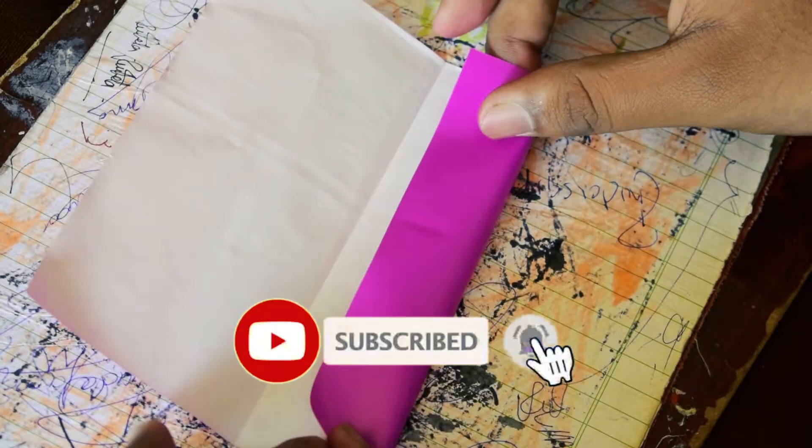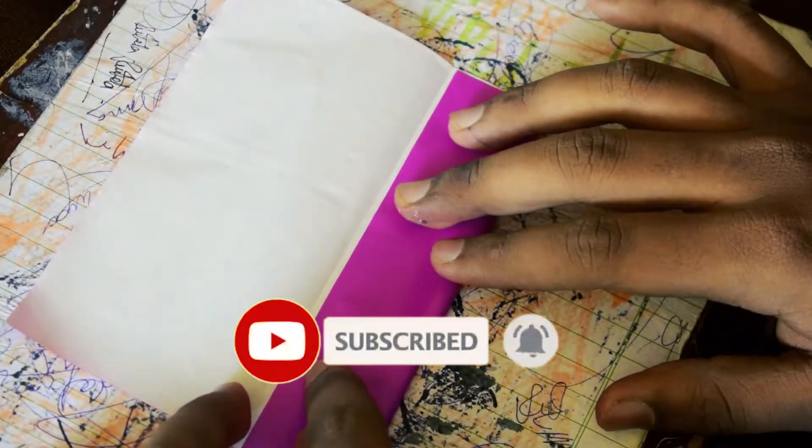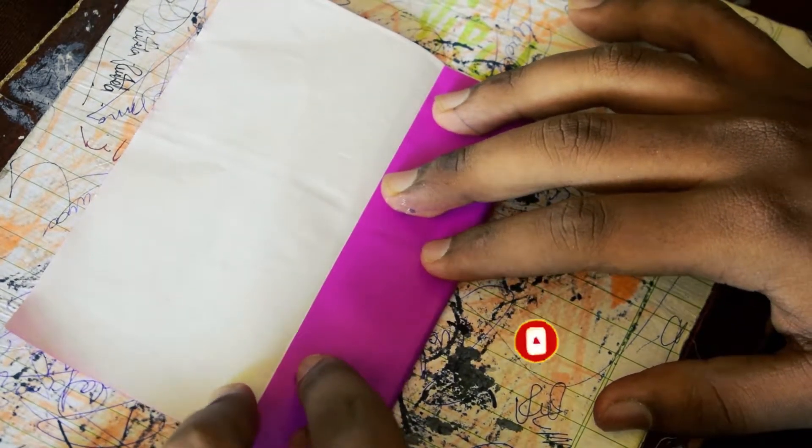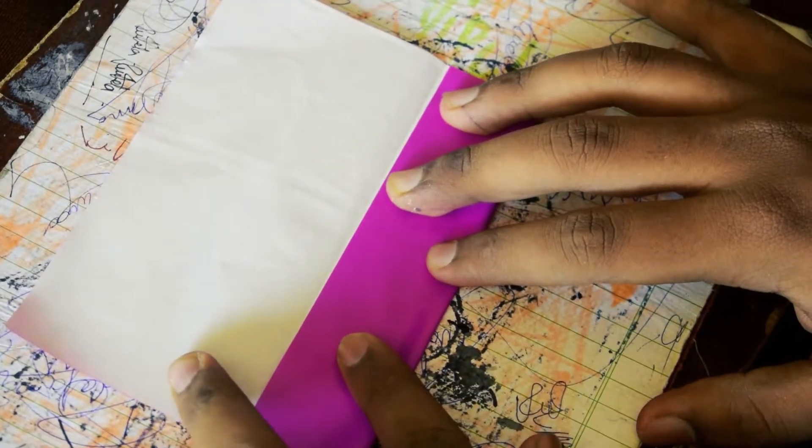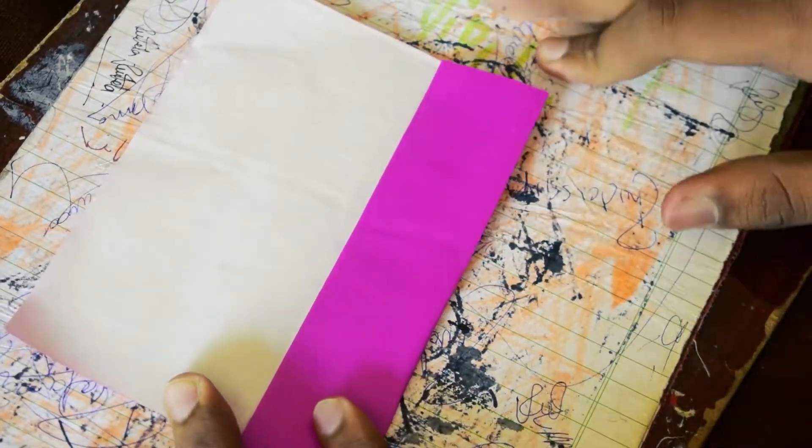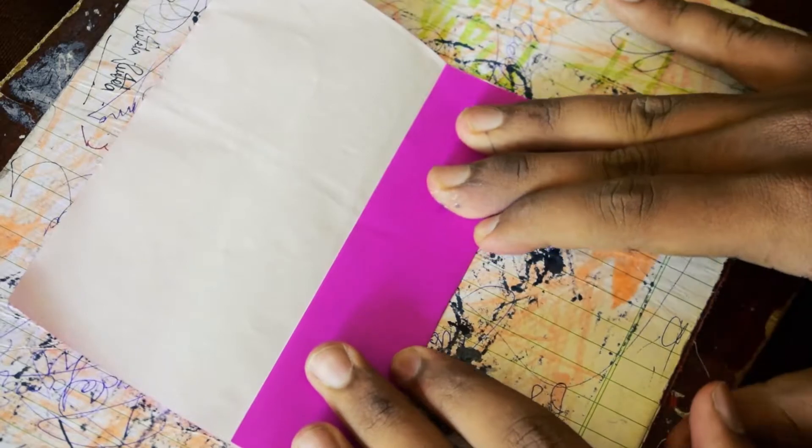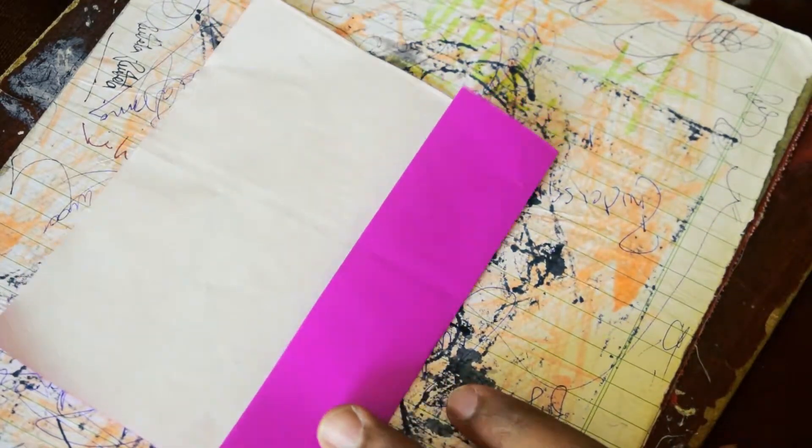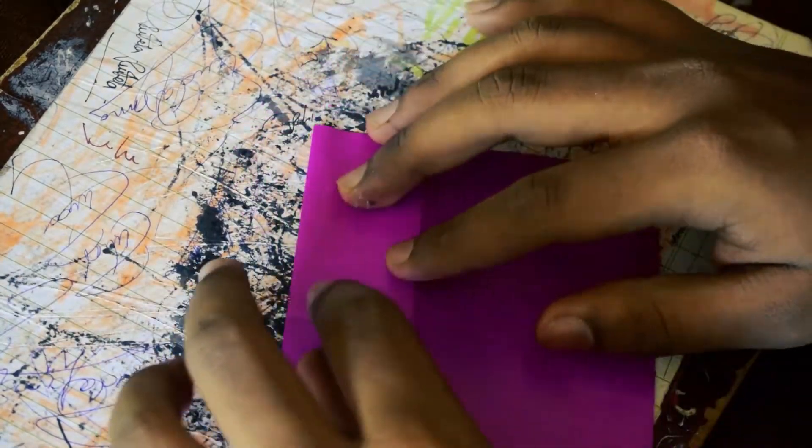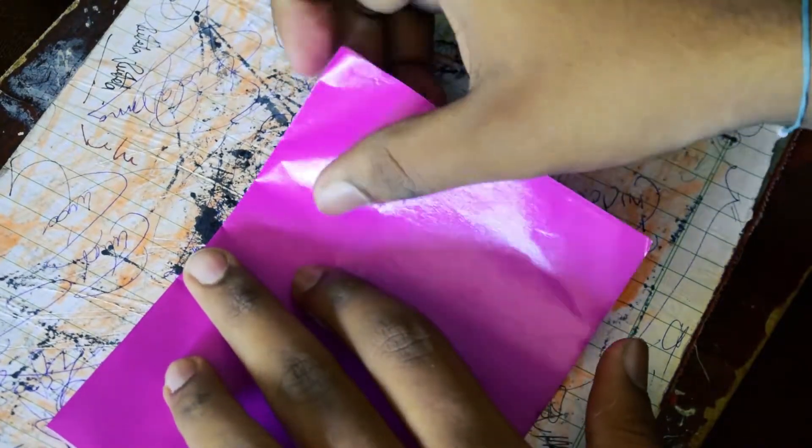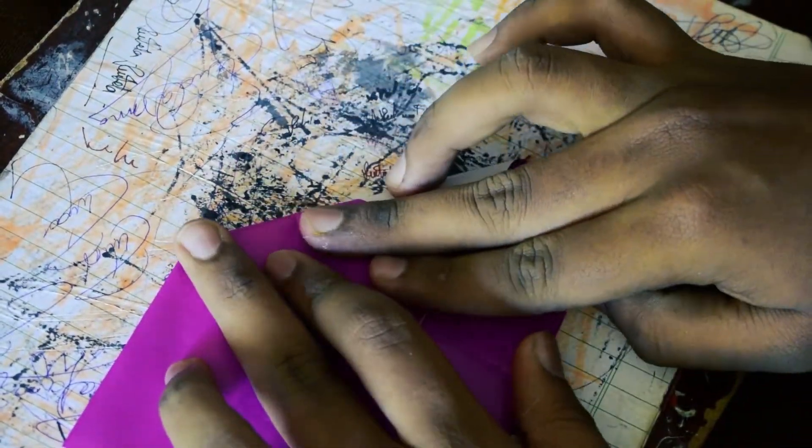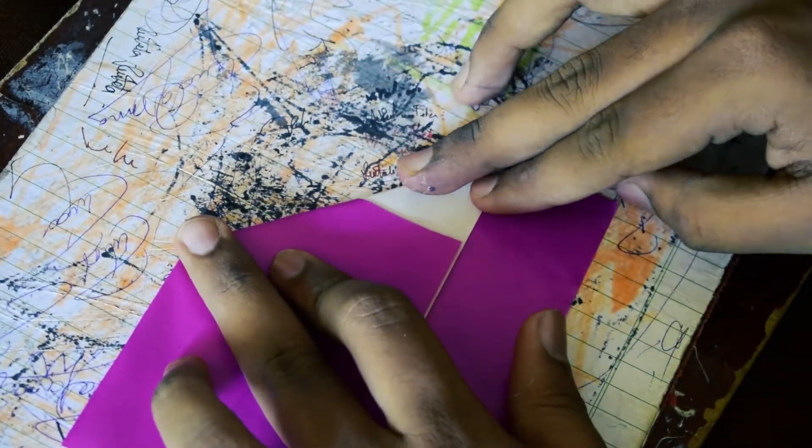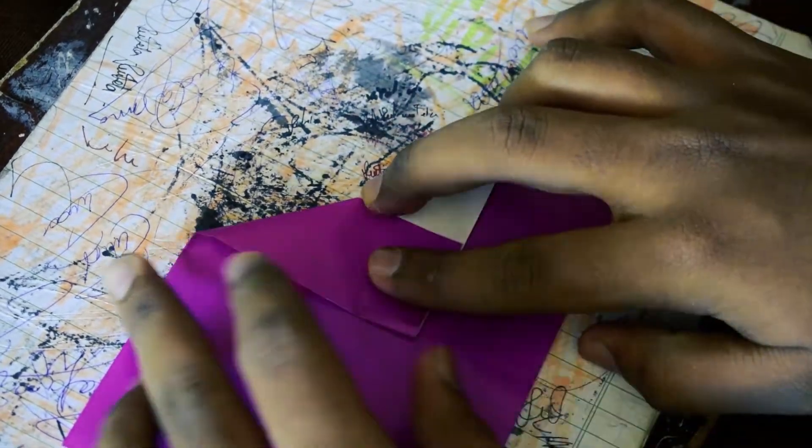The next step is make another half fold like this, and as you can see, this is the first fold. Then make a triangle on the right side first and on the left side.